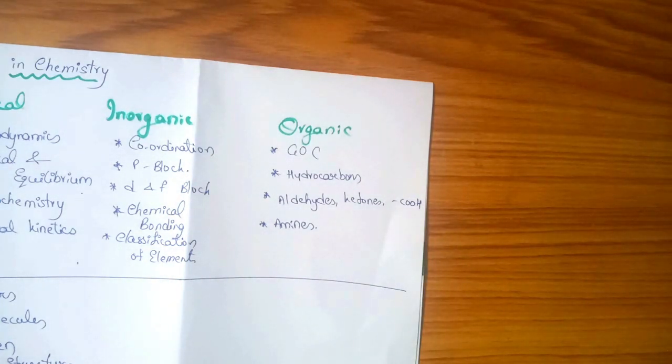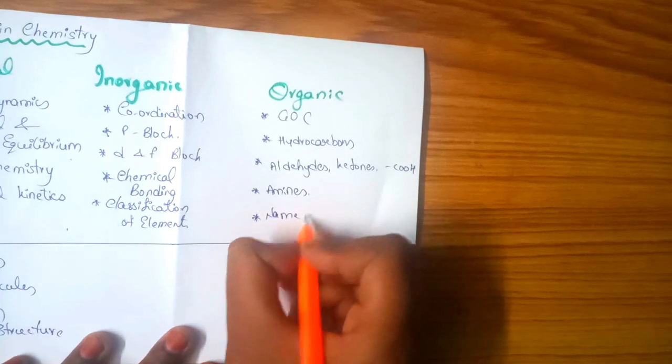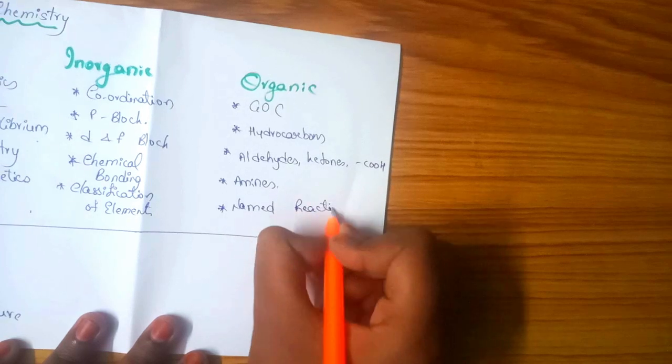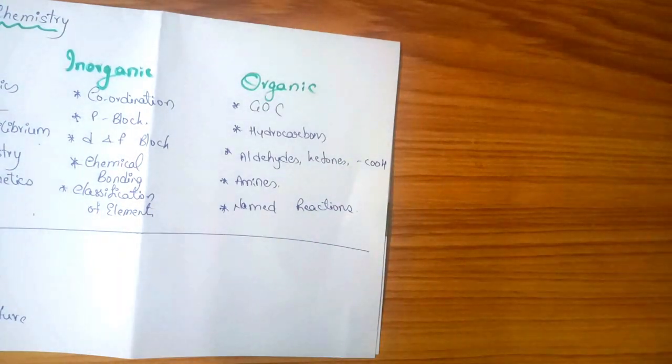The next chapters: hydrocarbons, aldehydes ketones, carboxylic acids. These are very easy to do with previous questions and MCQs and previous reactions. Name reactions are also very very important. There are 30-35 name reactions. If you follow my channel, I post classes with tricks and shortcuts, so you don't have to worry about it.